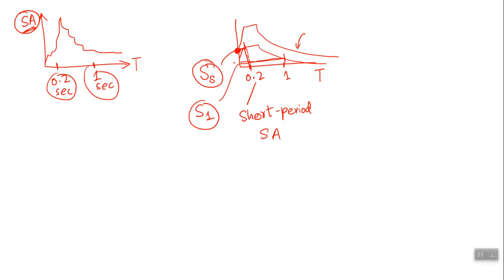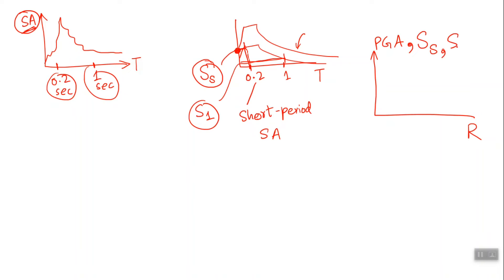The PSHA process — the hazard assessment process — can be performed for any ground motion parameter. Just as you can make hazard maps for PGA of future shaking, you can also make hazard maps for S_S and S_1. You can make hazard maps for spectral acceleration values. The ground motion prediction equations which relate peak ground acceleration and source-to-site distance r have versions available for any other ground motion shaking parameter. The GMPE will have a version available to relate S_S with r, a version to relate S_1 with r, and may even have a version relating MMI value with r.